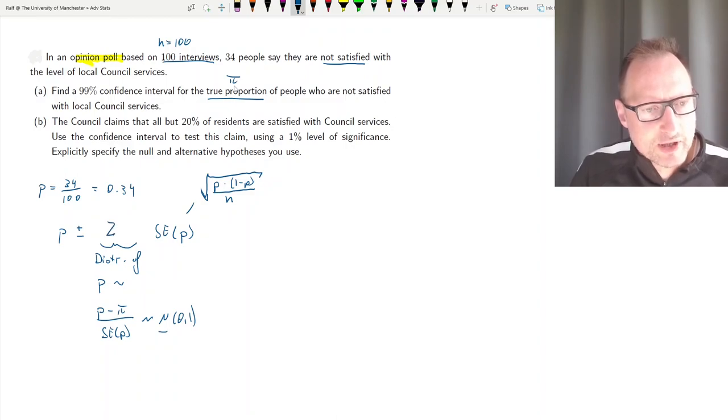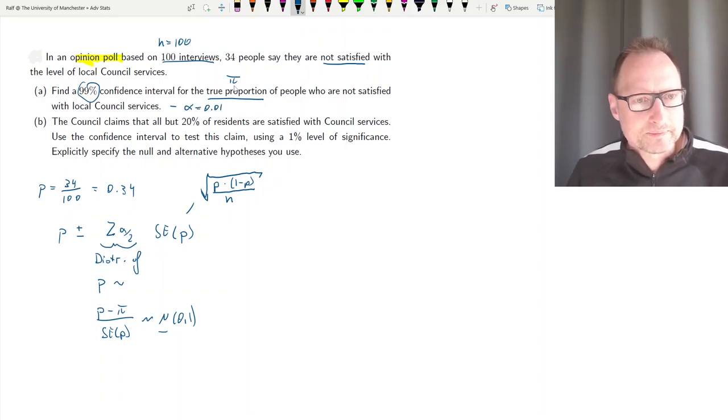What we learn from this is that this value here from the distribution comes from the normal distribution. We call that a z value, and we want the value that cuts off alpha over 2. We want a 99% confidence interval, so we know that alpha is equal to 0.01. So that's what we need to calculate: sample proportion plus minus z alpha half times the standard error of p.